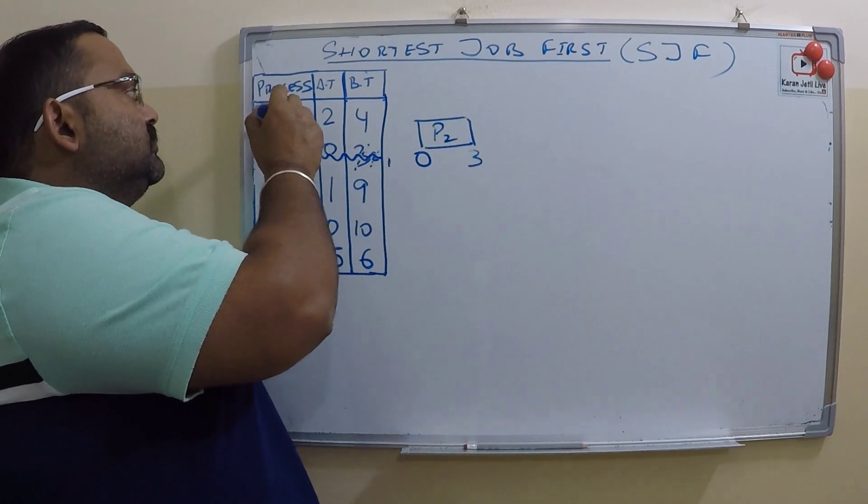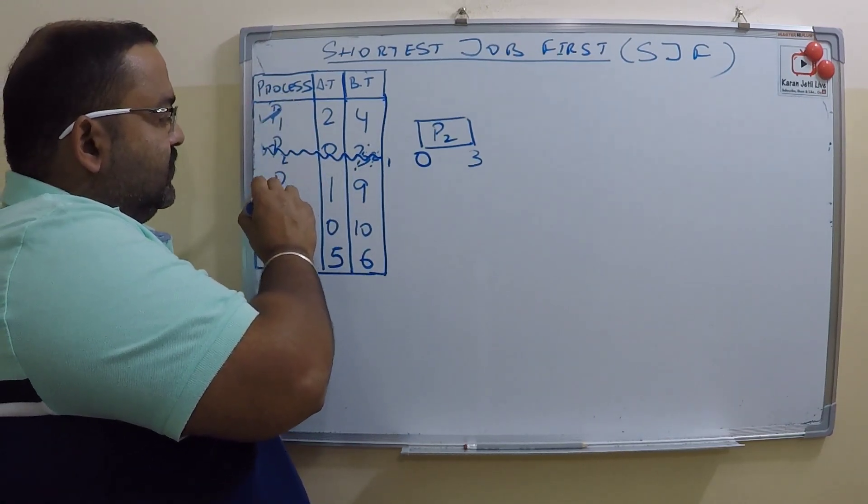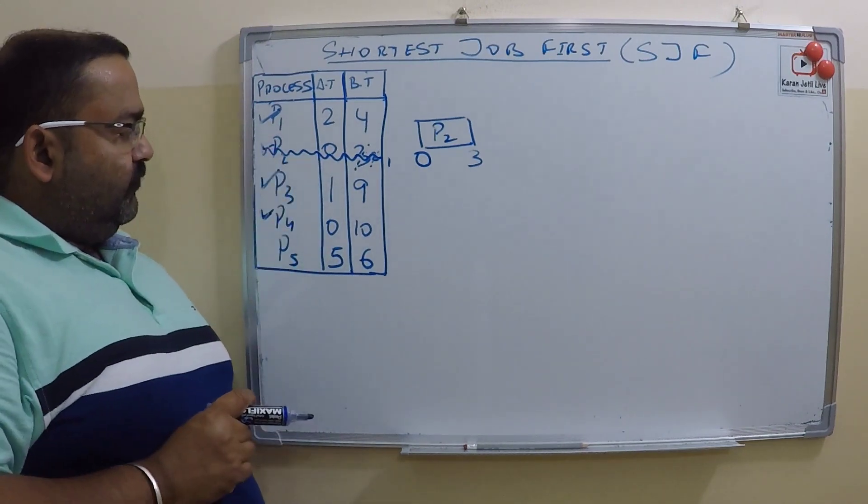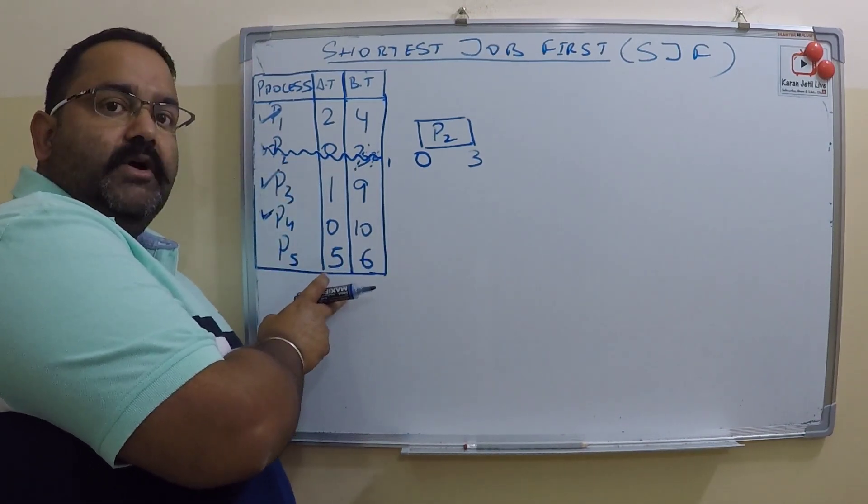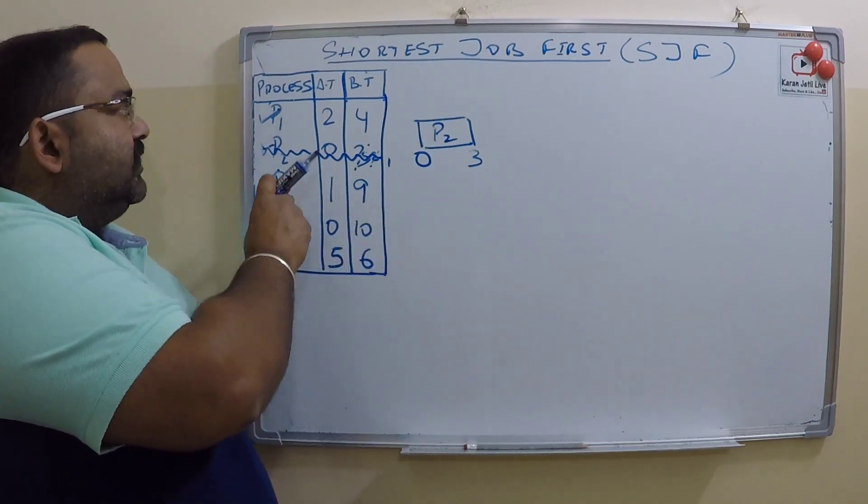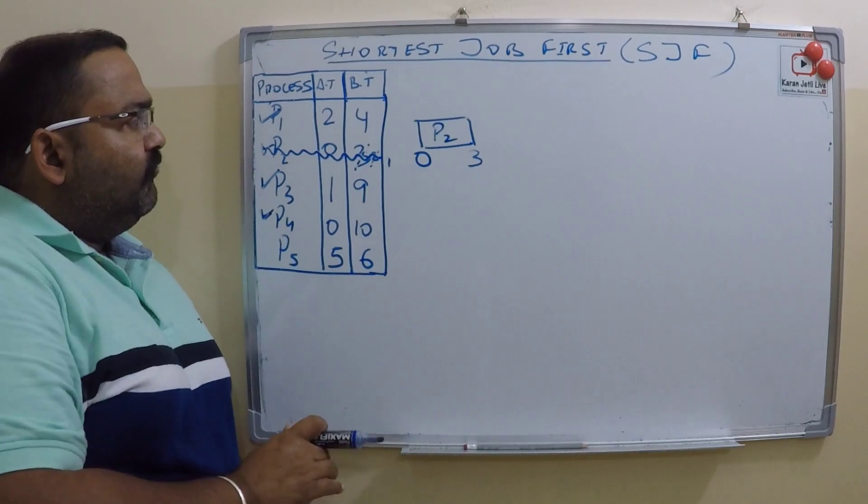That is P1, then P3, and P4. Still P5 did not come because P5 has to come at time five. So at time three we have P1, P3, and P4.